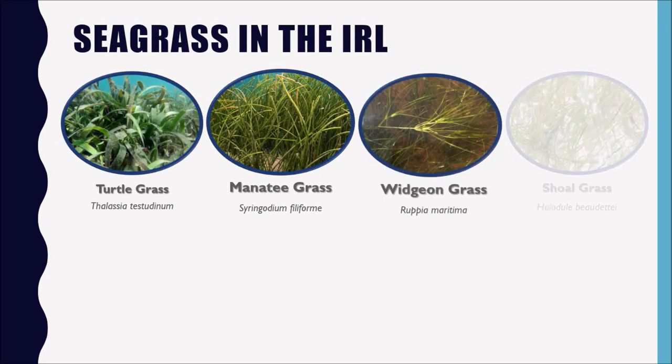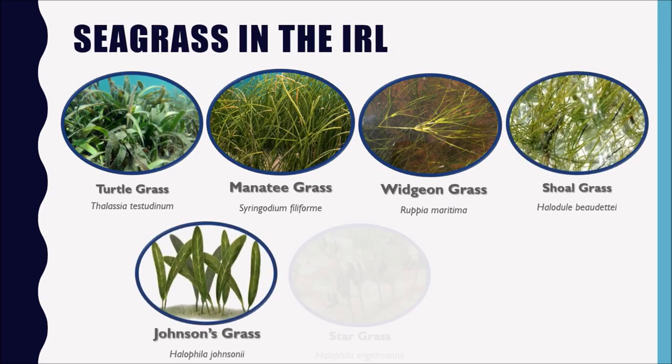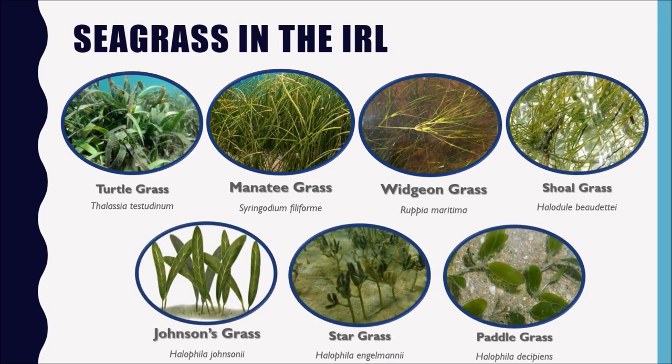We actually have seven species of seagrass that grow in the lagoon. Some are much more prevalent than others — for instance, turtle grass and manatee grass are fairly common, as opposed to something like Johnson's seagrass, which is only found in southeast Florida. Cool fact: it was the very first marine plant to be listed on the endangered species list.